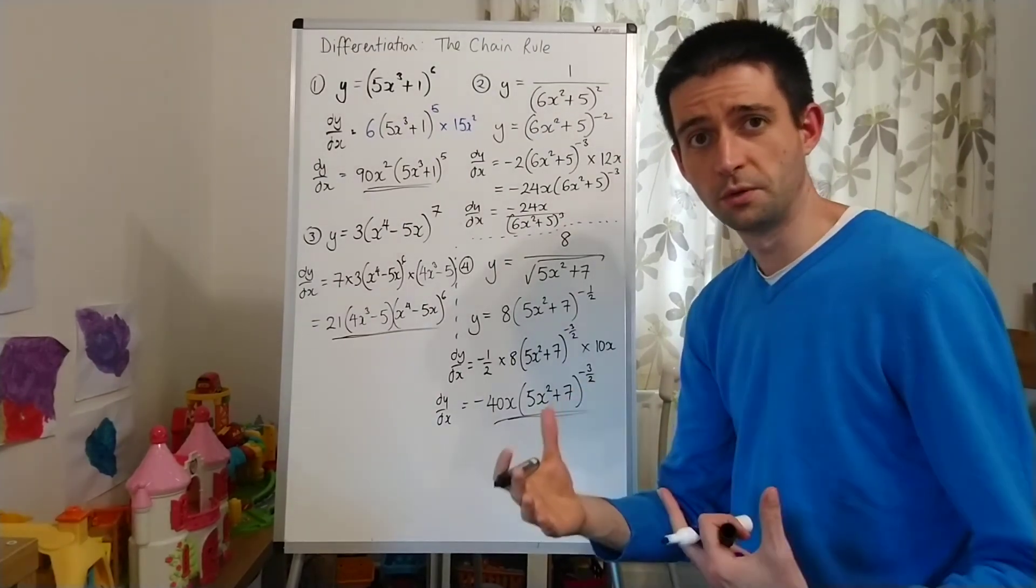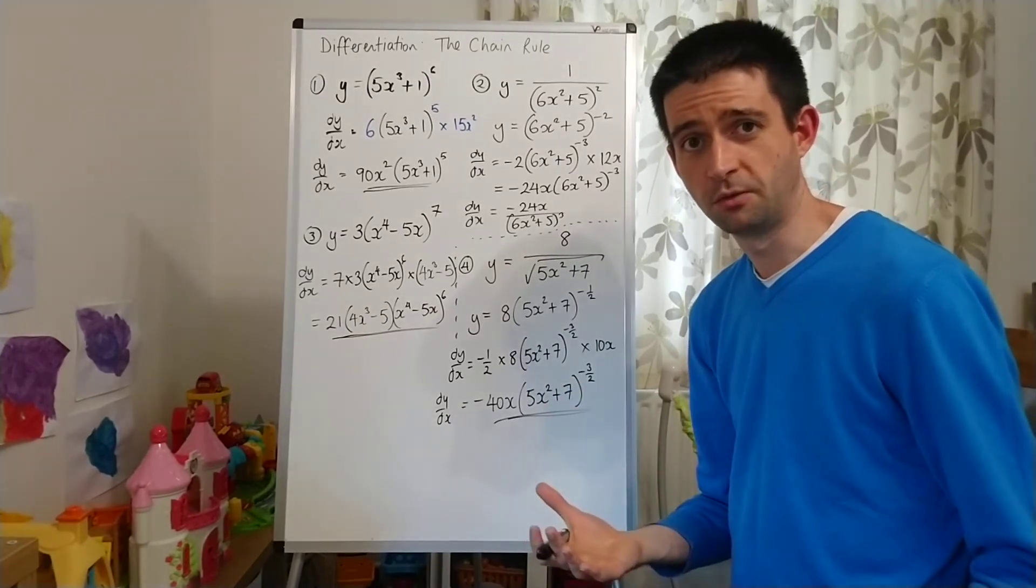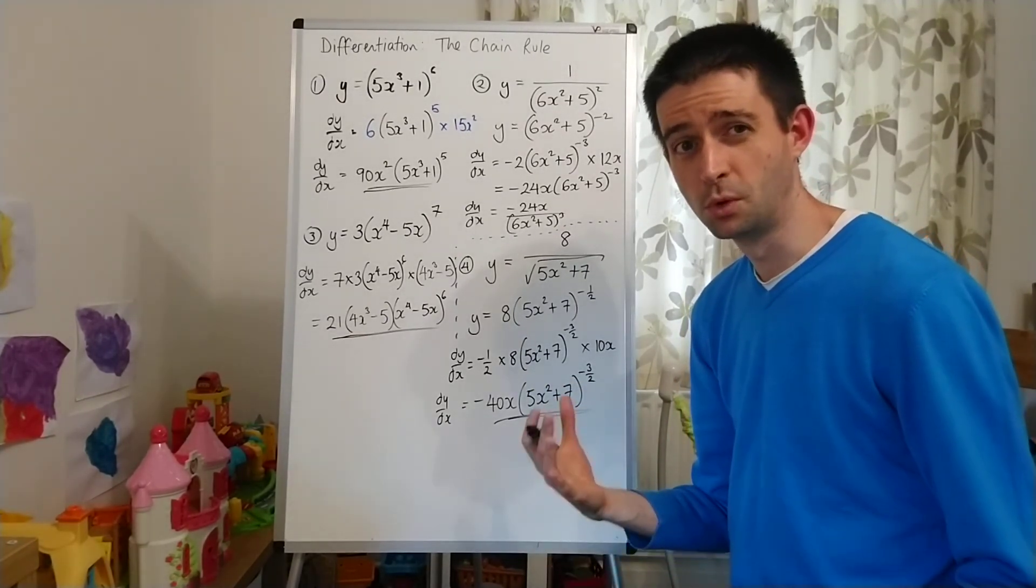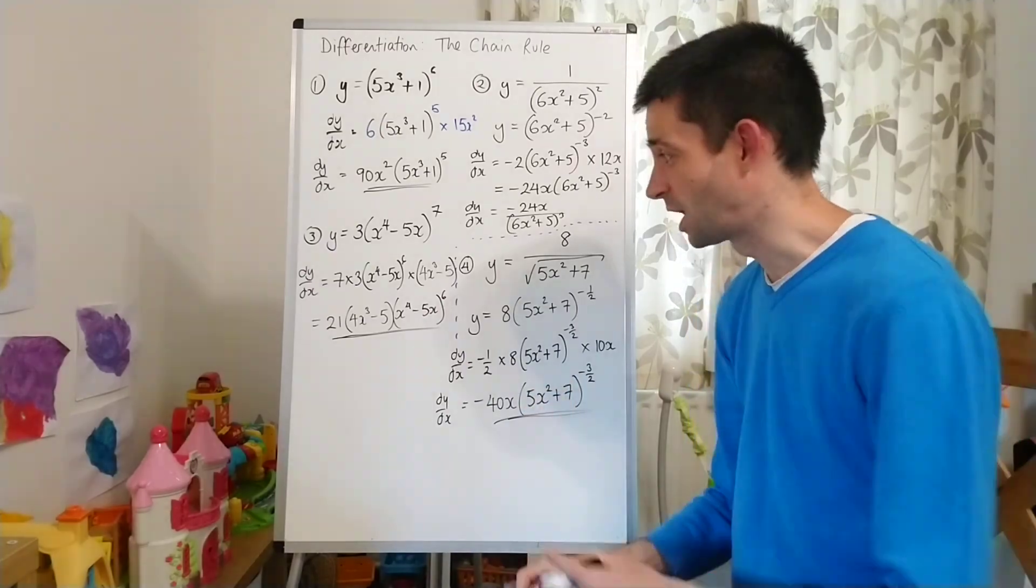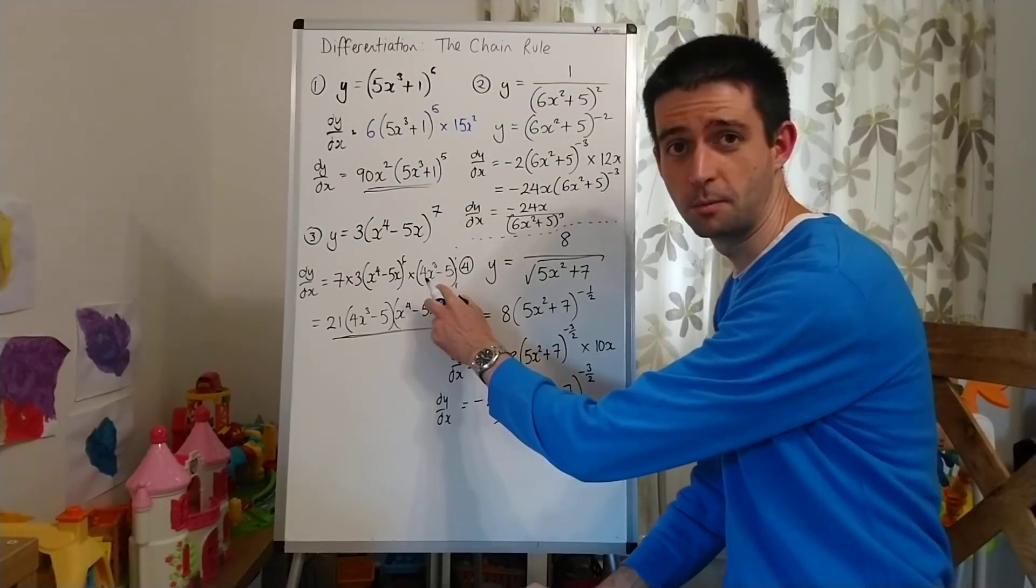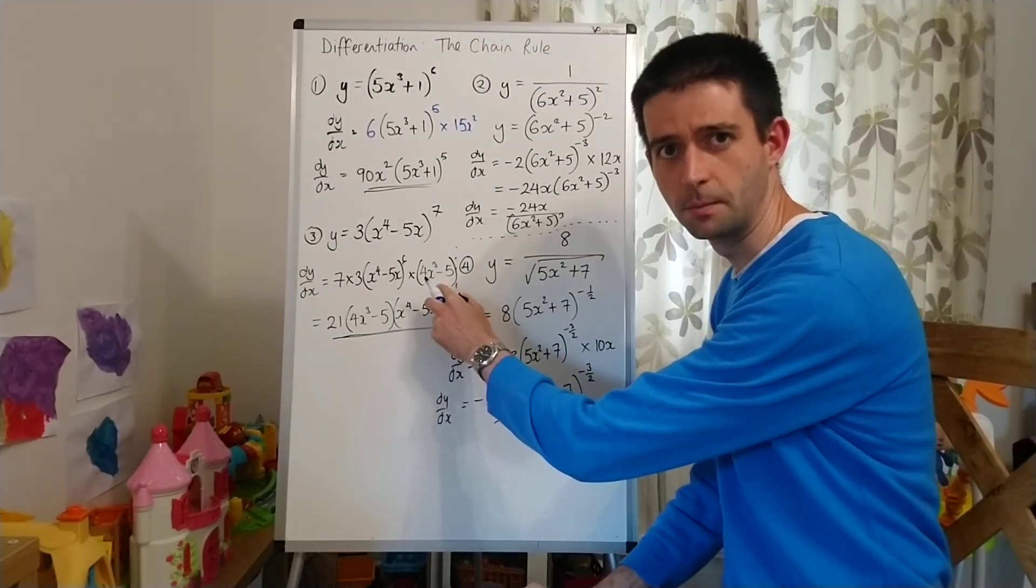But there you go. Power down. One of the power. Multiply by the differentiated bracket. The most important point probably on this board is if that differentiated bracket has two terms, make sure you get a bracket around it. Thanks for your company.